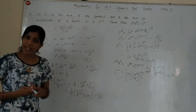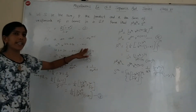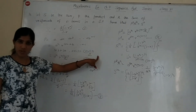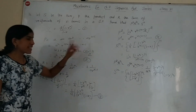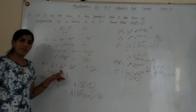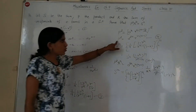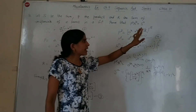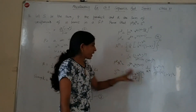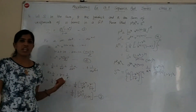So to recap: we first found the sum S of the GP, then the product P where the power of r ran from 0 to n-1 giving sum n(n-1) using the sum of natural numbers formula. Then the sum of reciprocals R where 1/a and 1/r appear. Squaring P, raising R to power n, and cancelling common terms gave us Sⁿ. That was question number 14.